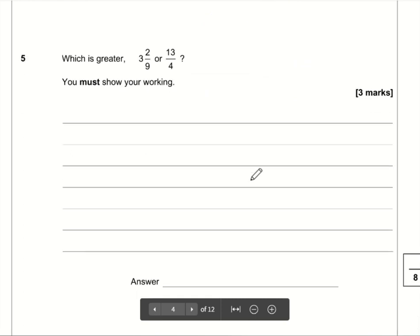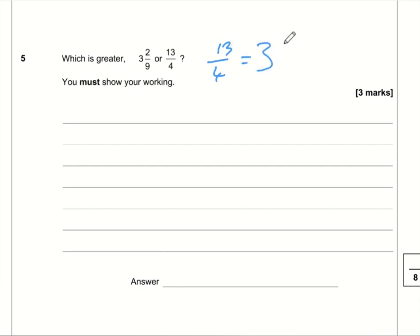Question number five, which is greater, three and two ninths or 13 over four? So what I would suggest, there's two ways you could do it. You could either turn three and two ninths into an improper fraction, or you can turn 13 over four into a mixed number. I personally believe it's going to be a lot easier to turn 13 quarters into a mixed number. 13 divided by four is three with a remainder of one. So that's three and a quarter.